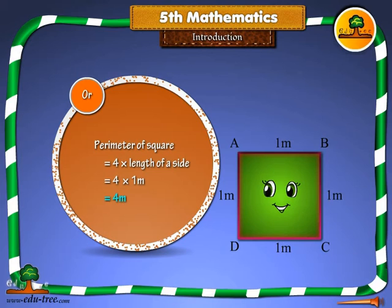Or, perimeter of square is equals to 4 into length of a side, equals 4 into 1 meter, equals 4 meter.